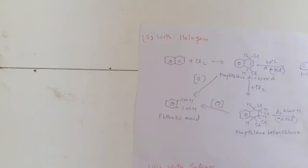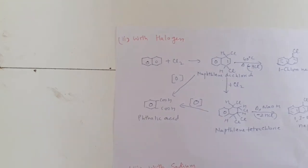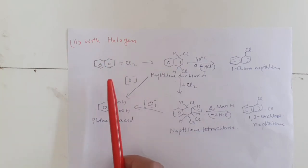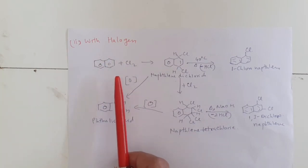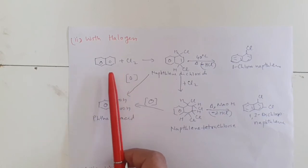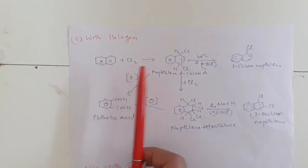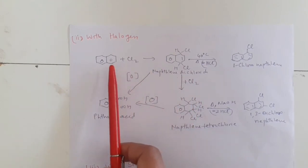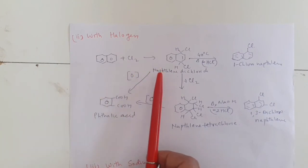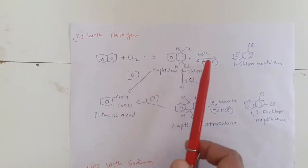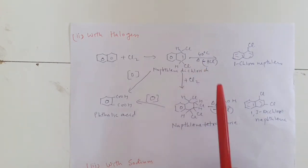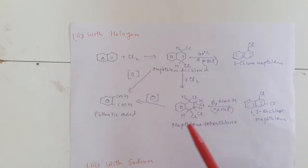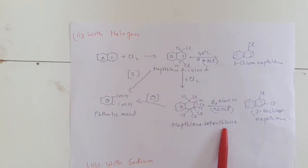The addition reaction of naphthalene with halogen: naphthalene also reacts with halogen. Naphthalene reacts with chlorine to give naphthalene dichloride — a chlorine molecule is attached on a double bond and we get naphthalene dichloride. This naphthalene dichloride, if it reacts with another Cl2 molecule, it attaches to another double bond and we get naphthalene tetrachloride.